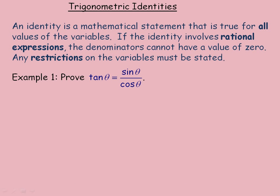This PowerPoint will show how to prove trigonometric identities. An identity is a mathematical statement that is true for all values of the variables for which it is defined. If the identity involves any rational expressions, the denominators cannot have values of 0 because division by 0 is not defined. Any restrictions on the variables must be stated. We're going to prove several trigonometric identities in this PowerPoint.